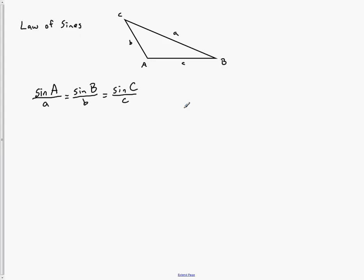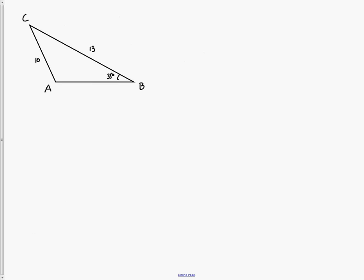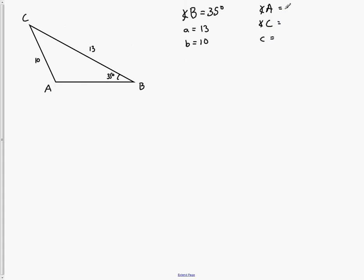Let's look at some examples. Here I have a triangle where angle B equals 35 degrees, side little a is 13, and side little b is 10. I want to solve this triangle — that means get all the values I don't have. I don't have big A, I don't have big C, and I don't have little c. Those are the values I need.